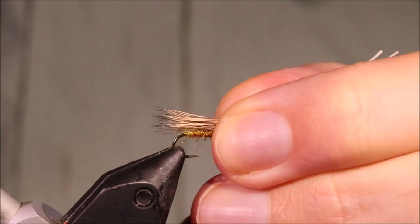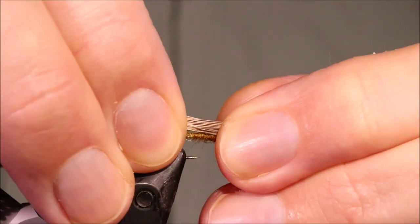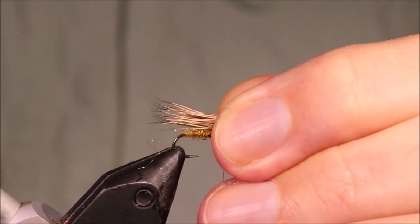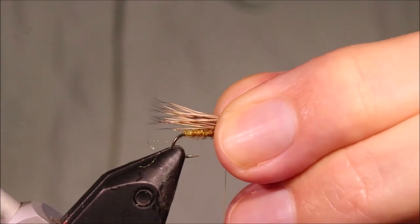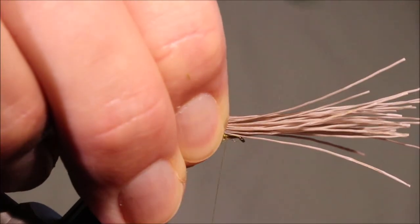Now you can see there, the tips of the hair are coming right out behind the back of the hook there. I want my wing to be one and a half abdomen length. Plenty long enough.